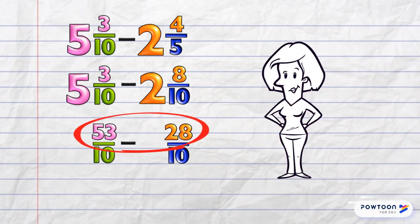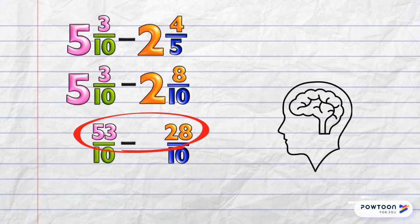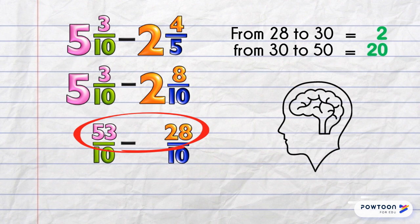We want the difference between 53 and 28. You can do your subtraction working at the side or you can use mental math. From 28 to 30, the difference is 2. Then from 30 to 50, it's another 20. 3 more gets us to 53.